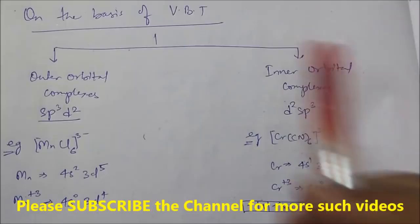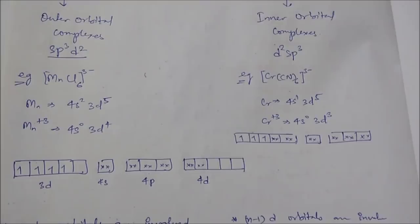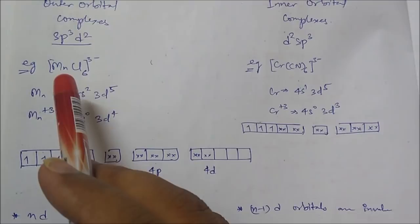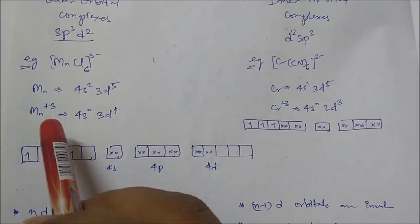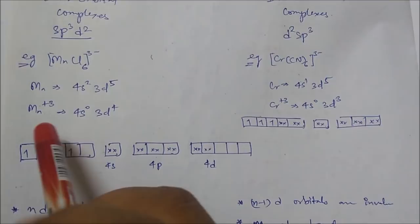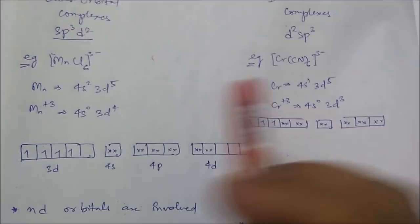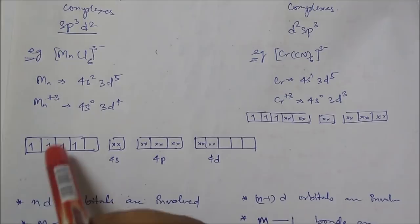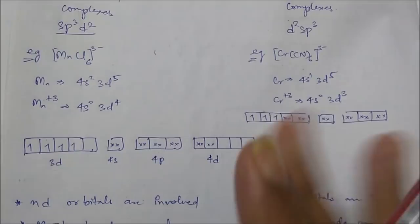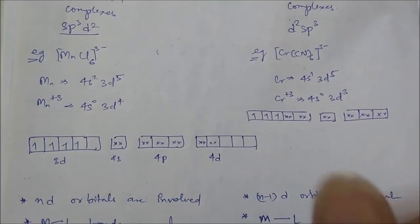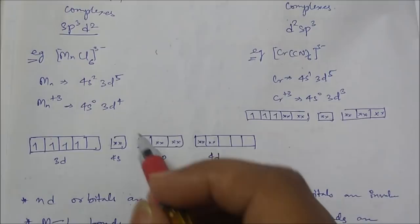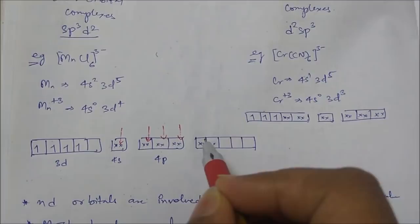Take the example of MnCl6³⁻. Manganese has 25 electrons with configuration 4s²3d⁵. In the +3 oxidation state, Mn³⁺ has configuration 4s⁰3d⁴. Filling the 3d orbital with 4 electrons leaves 4s, 4p, and 4d vacant. The six chlorine ligands share their electron pairs through coordinate bonds into the 4s, 4p, and 4d orbitals — so the outer orbitals are involved, making this an outer orbital complex.